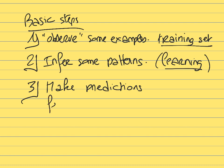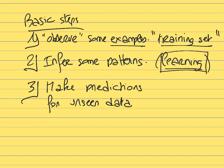The data used for training is the training set. Once the model has learned, it can make predictions on data it has never seen before — the test set. These are new data points for which the model predicts the answer.